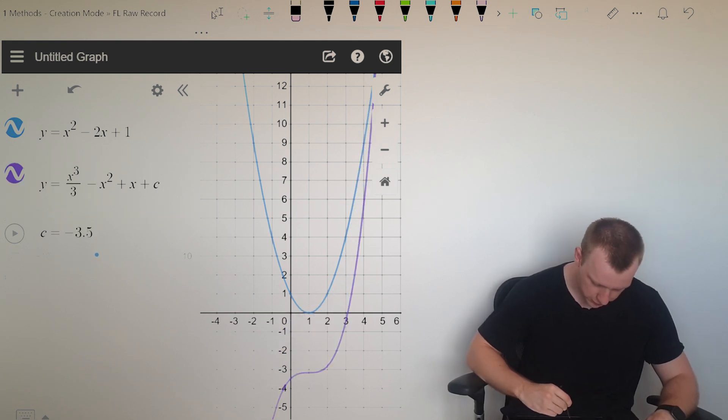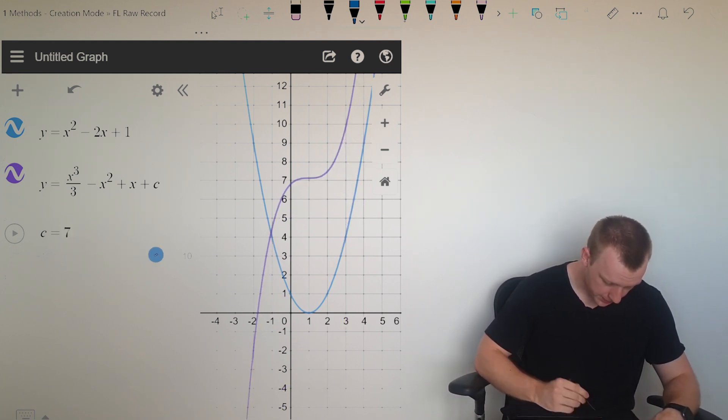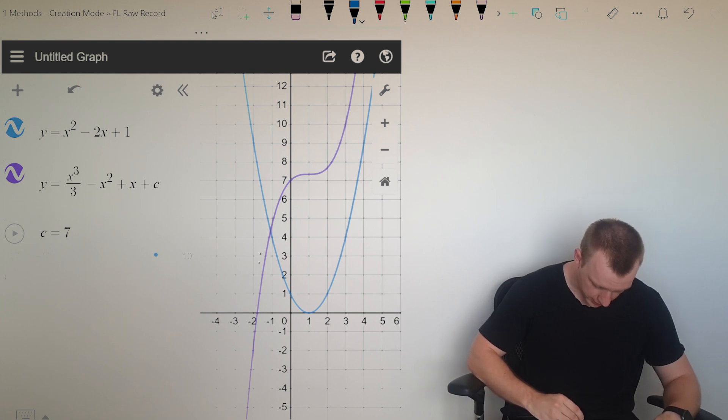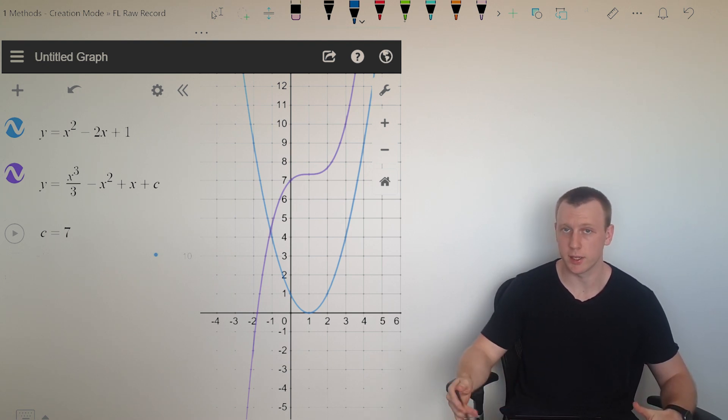And again, this plus c doesn't matter. If you shift it down, it's still increasing, then flat at that same point x equals 1, and then increases for those same x points. You slide it up, increasing, slows down, flat, increasing. So that constant value doesn't change slope value.